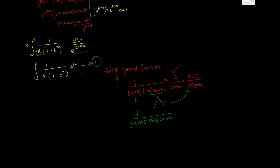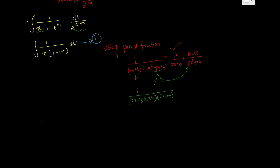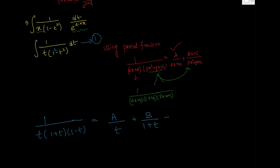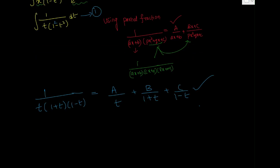Before integrating, let us handle the term 1/[t·(1 - t²)]. Since 1 - t² = (1 + t)(1 - t), we write the partial fraction decomposition as: A/t + B/(1 + t) + C/(1 - t). I will be doing another video on partial fractions methods.